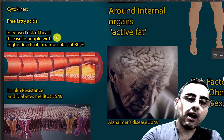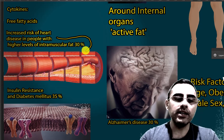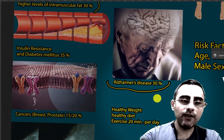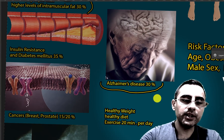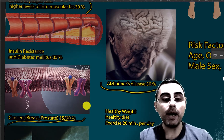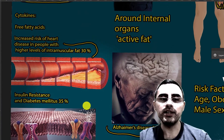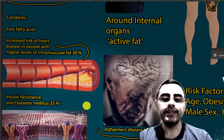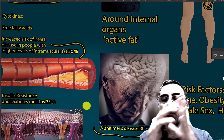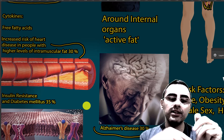Intramuscular fat increases heart disease and atherosclerosis by 30%, increases Alzheimer's disease by 30%, and increases the risk of breast cancer, prostate cancer, and several other cancers by 15 to 20%. When we say it increases risk, it means it increases risk independently — in persons of the same weight, not just in obesity.